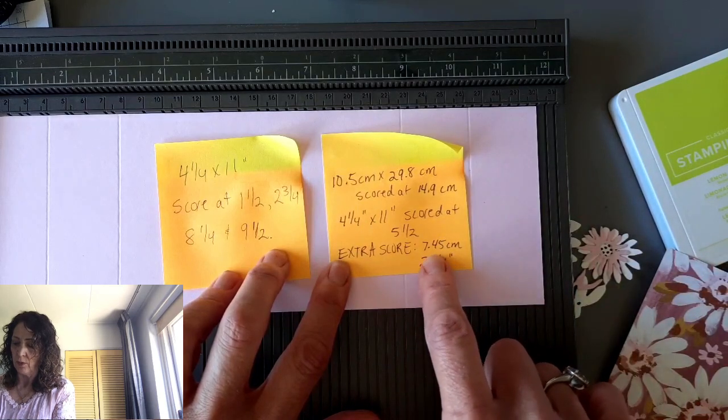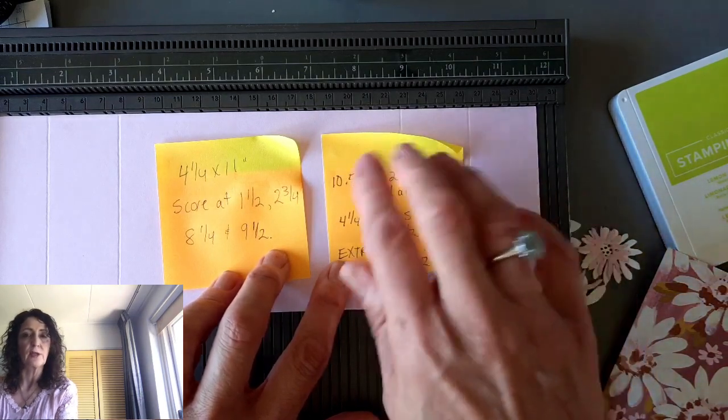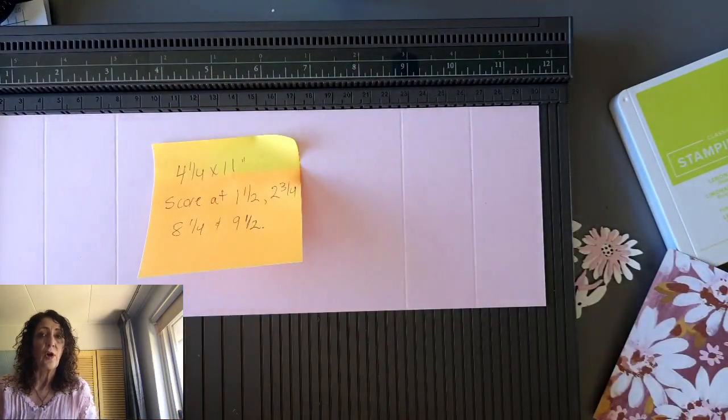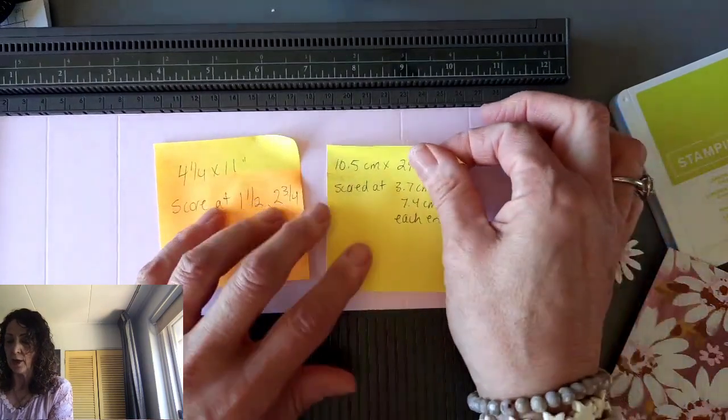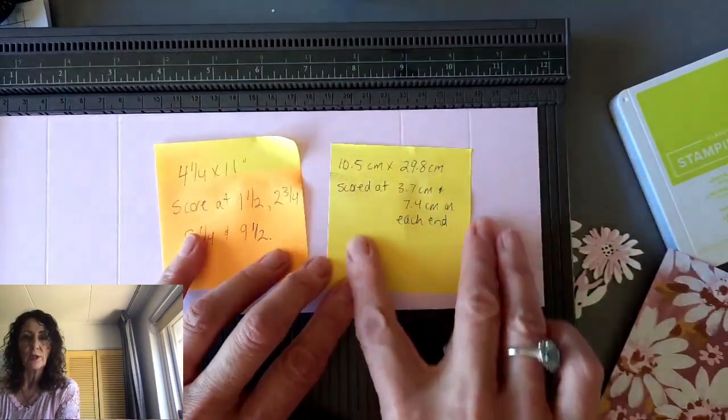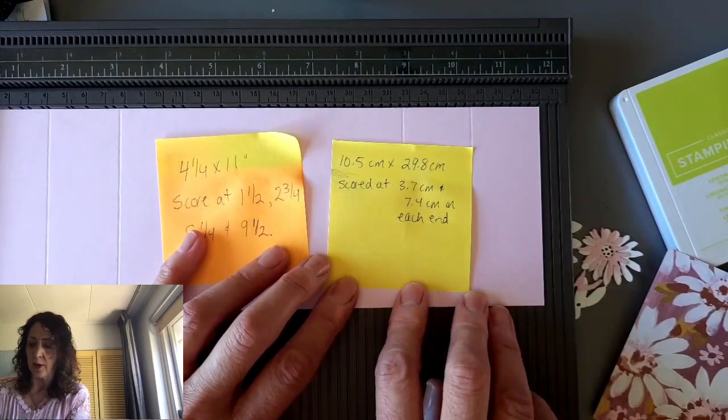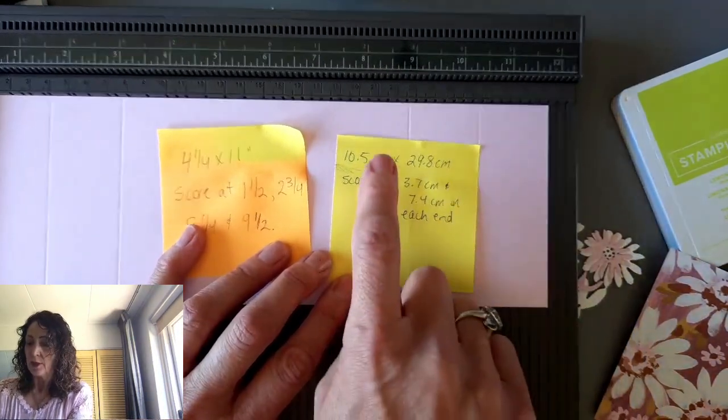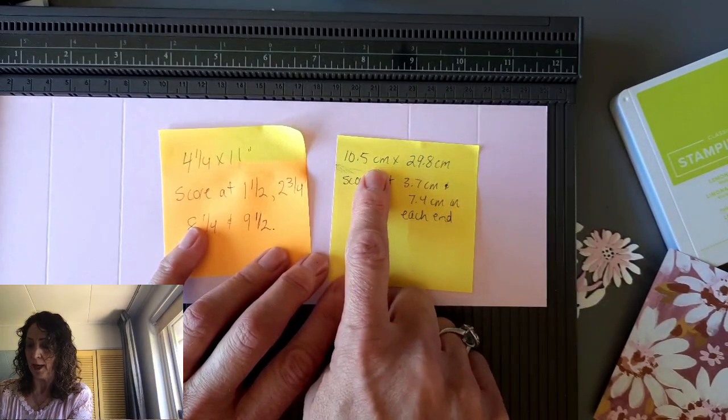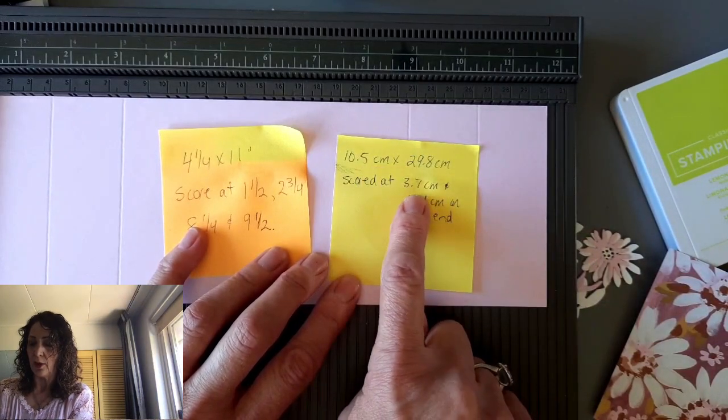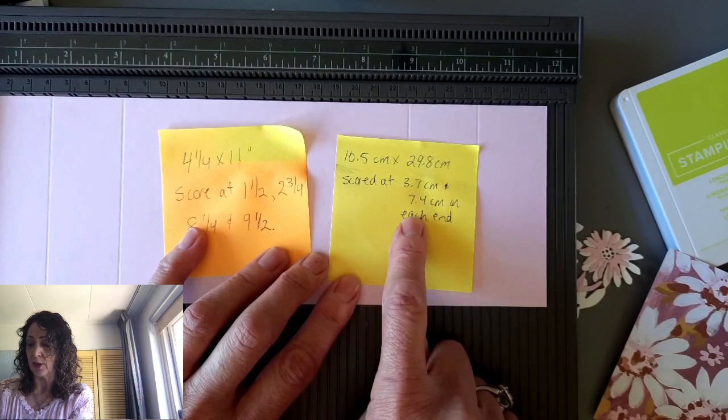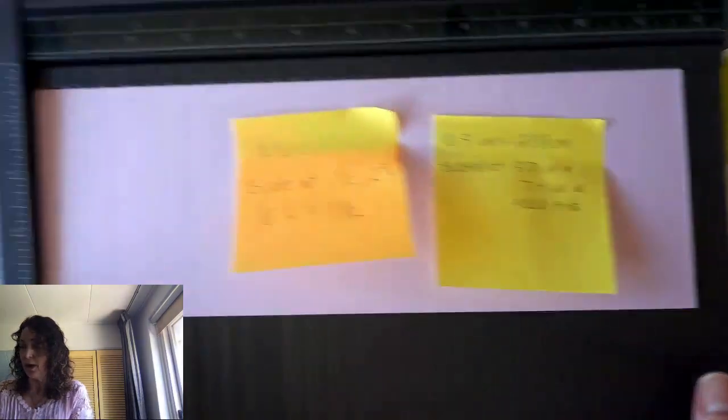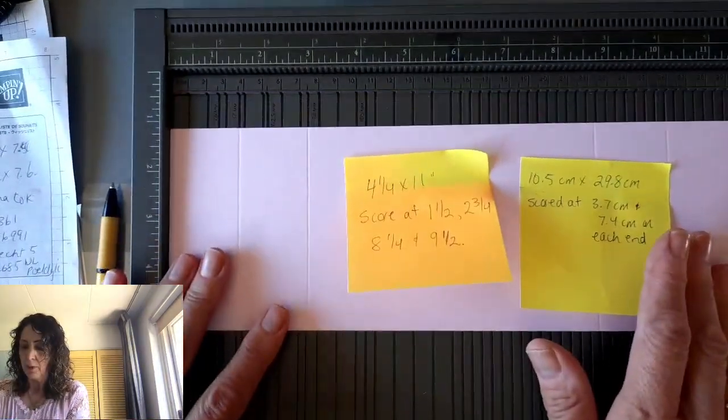And it's not scored at 14.9. This is totally wrong. I could start all over with this video, but I'm not going to. Here is the right measurements. The other one was for a Z-fold card that I did the other day. So it's 10.5 centimeters by 29.8, and then you score at 3.7 centimeters and 7.4 on either end.